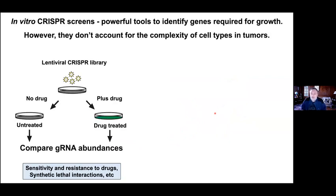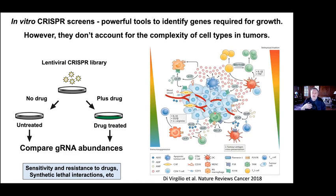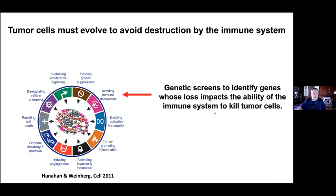So we turned to doing genetic screens. I like genetic screens because you don't have to know the answer — you just have to know the question and let the cells tell you. CRISPR screens and shRNA screens before them have tremendous power, especially in 2D culture, to look for sensitivity or resistance to drugs, synthetic lethals, etc. But they don't take into account the complexity of the tumor microenvironment. Since avoiding immune destruction is a key hallmark of cancer evolution, we wanted to identify genes whose loss impacts the ability of the immune system to kill tumors.